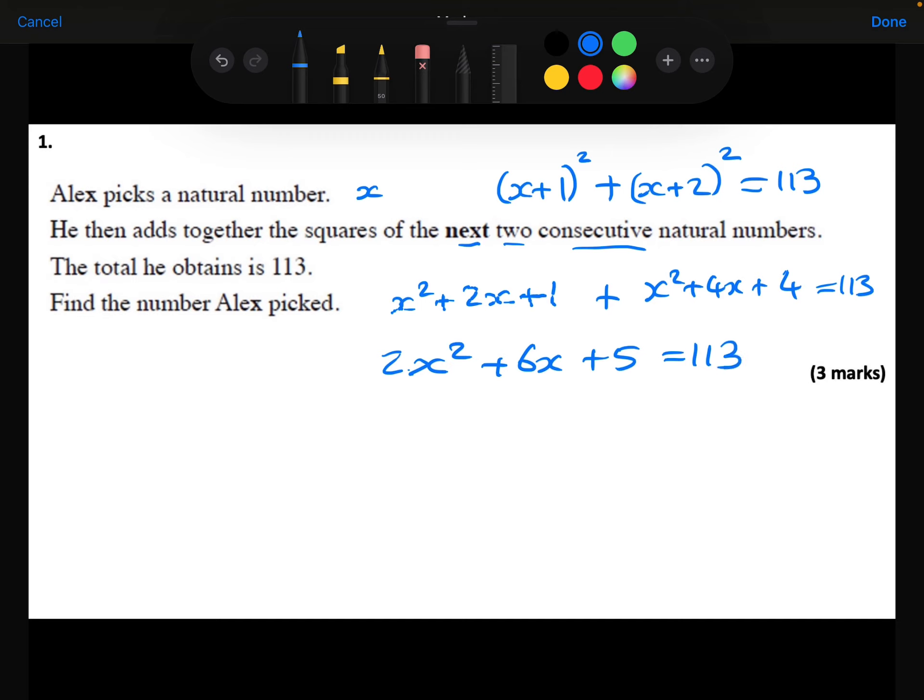Let's make this equal to 0. So we're going to take away 113 from both sides. And now we're going to solve this equation. To make this a little bit easier for myself, I can divide everything through by 2.